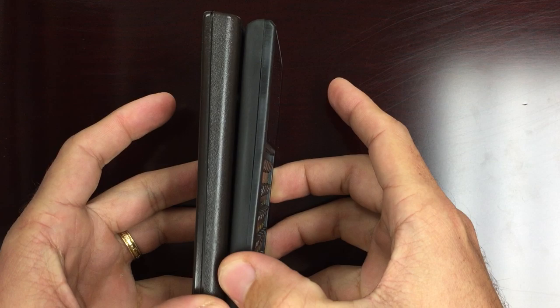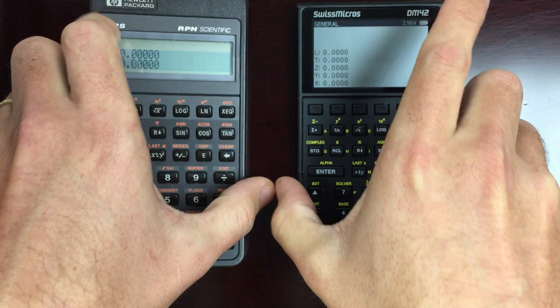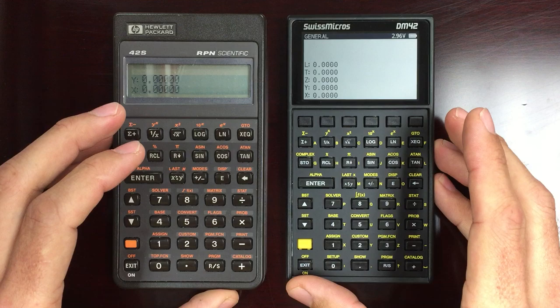Thickness, again, it's a little bit thinner, both the top and the bottom. So very portable, very compact calculator, but with a nice big screen to it.